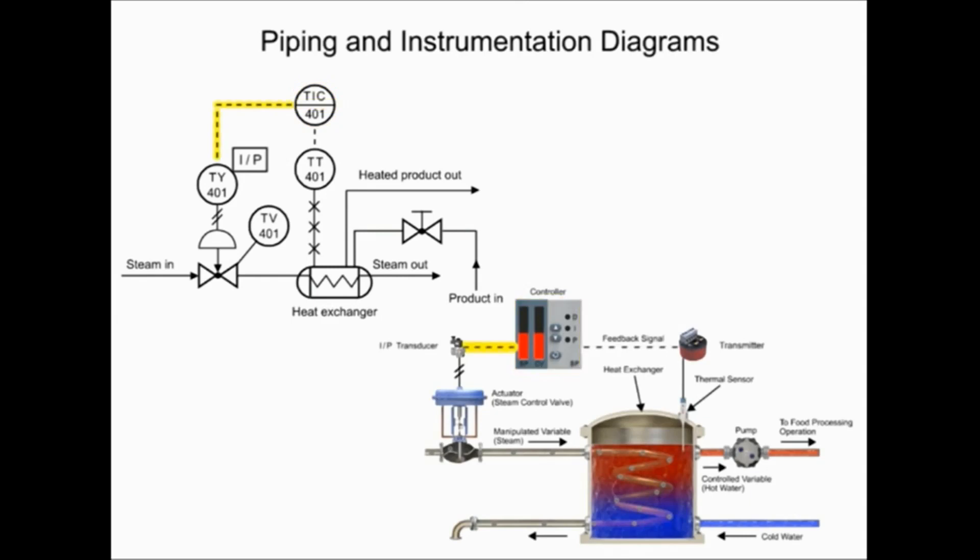An electronic signal from the controller is indicated by the dashed line. The controller output is connected to the transducer that controls the steam flow, indicated by the second letter, Y, of the functional identifier.